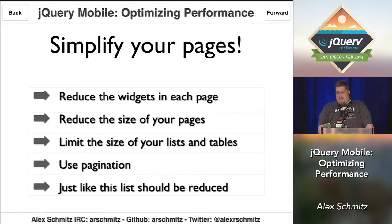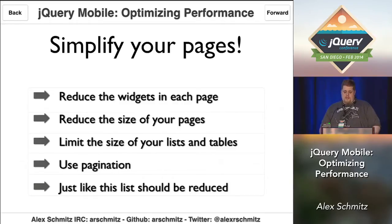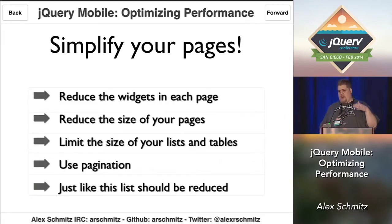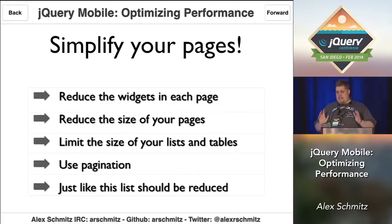One of the best tips I can give you to improve performance in your jQuery Mobile apps is to simplify your pages. Reduce the number of widgets you're using on each page. Reduce the size of your pages. Limit the size of lists and tables especially — those really long lists are a killer for performance. Instead, consider pagination.